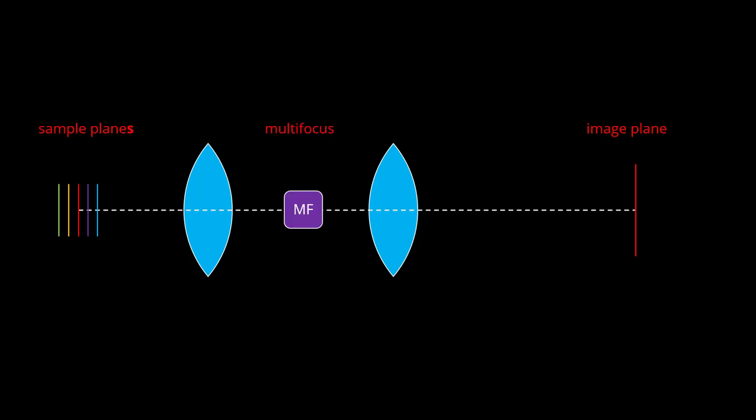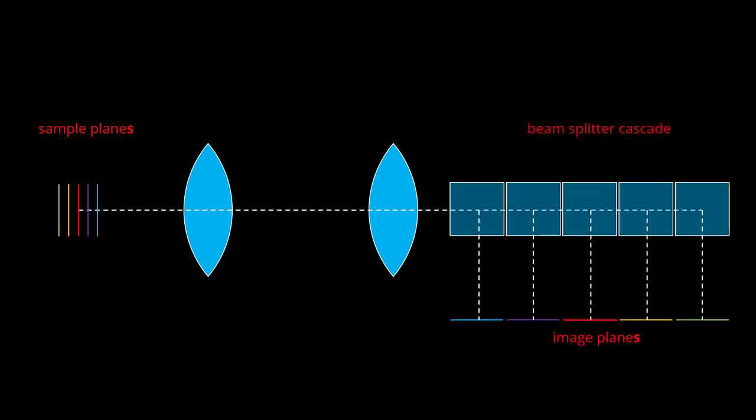As shown in a previous video, this is possible with multi-focus optics. For instance, a cascade of beam splitters creates multiple copies of an image with different path lengths that result in different focal planes.